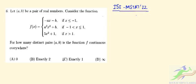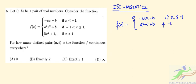Question 6. Let A, B be a pair of real numbers. Consider the function F(x), which is defined as: minus of A times x minus B, if x is less than or equal to minus 1; A squared times x plus A squared plus B, if minus 1 is less than x less than or equal to 1; and 5x times A squared plus 1, if x is greater than 1. We have to find for how many distinct pairs A and B is the function F continuous everywhere.